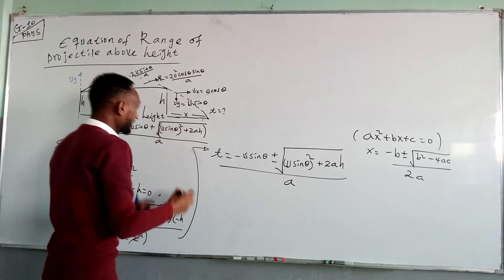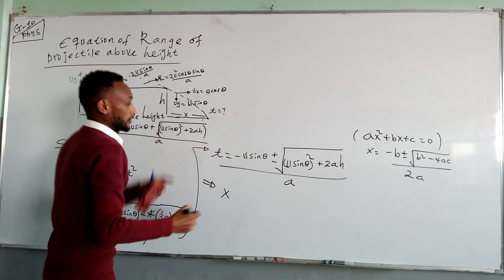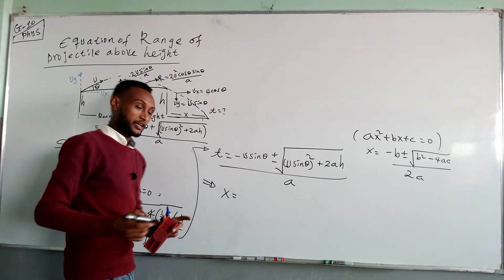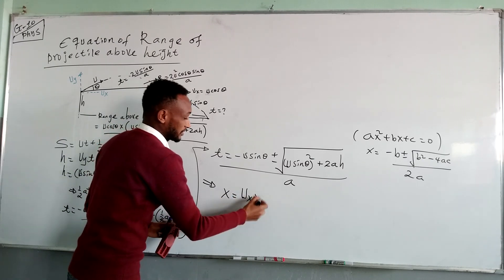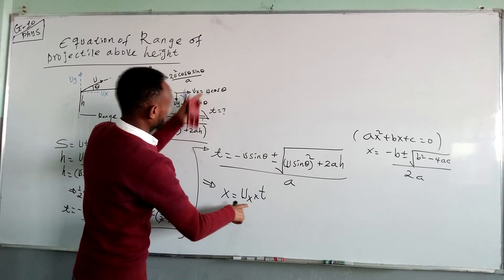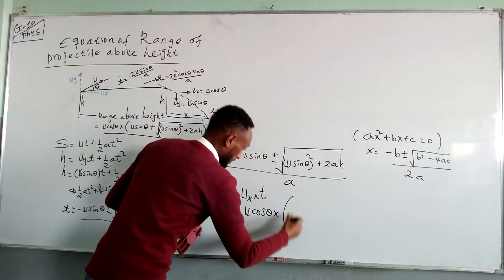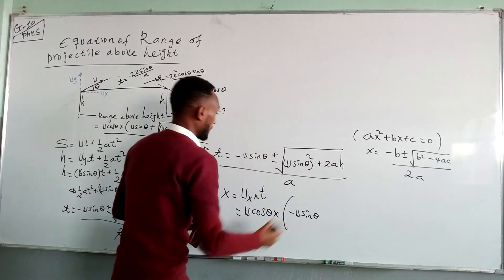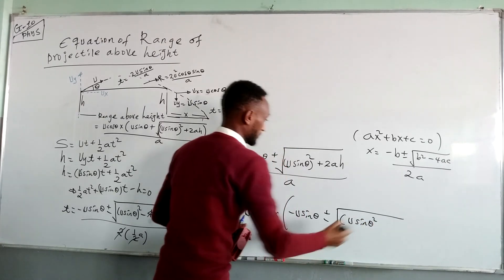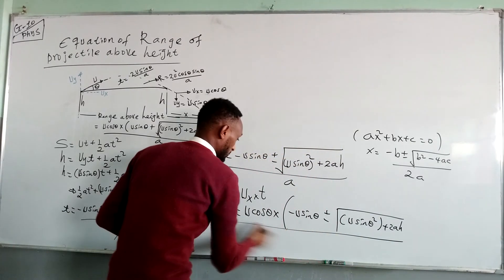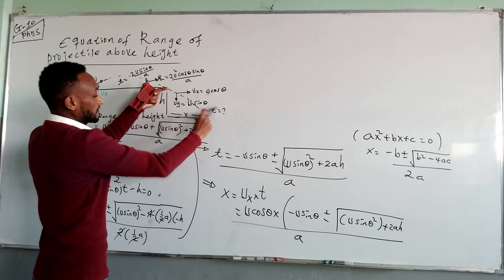Finally, we can find the horizontal distance x. The horizontal displacement x is related to horizontal velocity times time. Therefore, x = u cos θ × (−u sin θ ± √(u² sin²θ + 2ah)) / a. This is the horizontal distance the projectile travels after reaching height h.